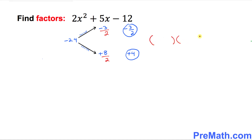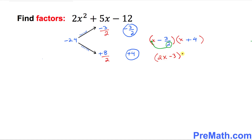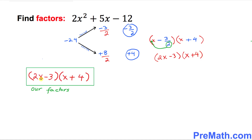Now finally we are going to find the factors. We put down two parentheses with x in each. Negative 3 over 2 goes in the first and positive 4 goes in the second. Looking at the fraction, the denominator is 2, so we drag that 2 to the front of x. This simply becomes 2x minus 3 times x plus 4.